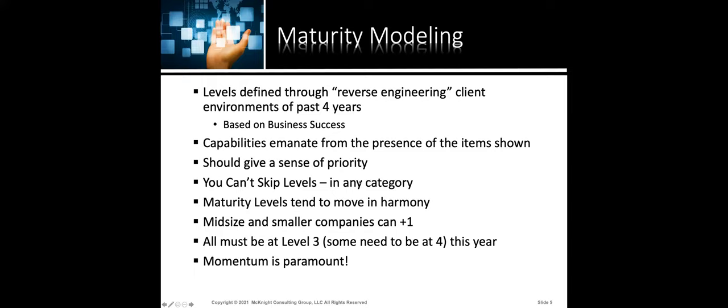This presentation, unlike most of mine, is not that slide-intensive, so we'll spend a little more time on some slides than usual. The third bullet should give you a sense of priority. We looked at various businesses and how successful they were first, then dropped in all the data points. Wherever you find yourself on the maturity model, you can look at the next level to see what a lot of companies did next — and what moved them up and moved their business up. You can't skip levels in any category — this is an observation from being with clients.